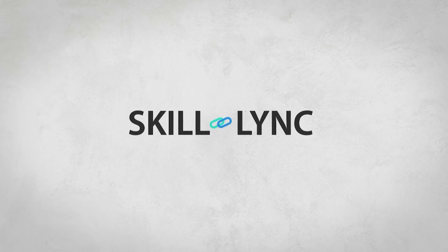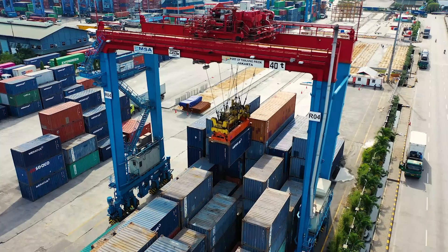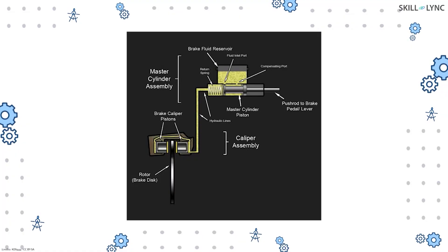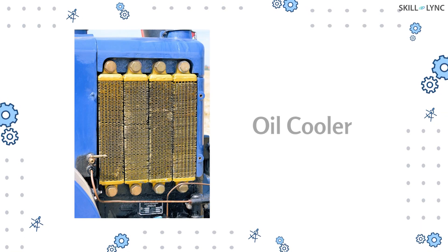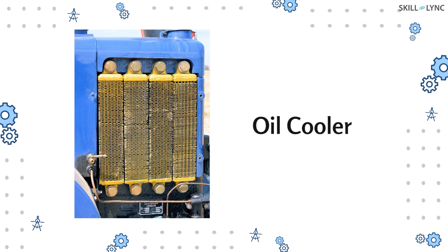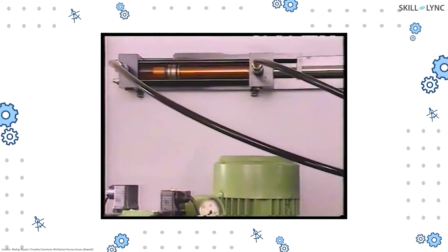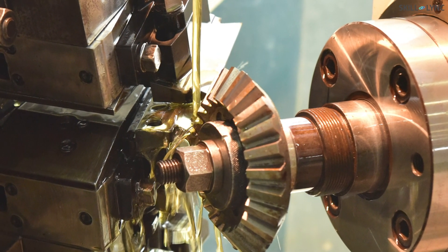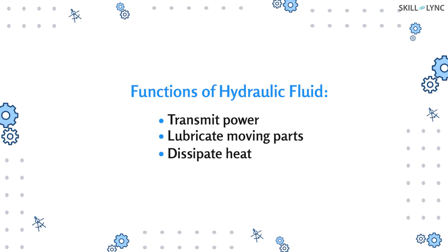Hey guys, welcome to the channel. A hydraulic system, however big it may be, works by moving the working fluid through the components. But apart from power transmission, a hydraulic fluid additionally helps in dissipating the heat from components, thus cooling the system. The heat generated is due to the working of various components. To ensure smooth functioning, the moving components of the system should be lubricated as well. Thus hydraulic fluid has various functions in a hydraulic power system.